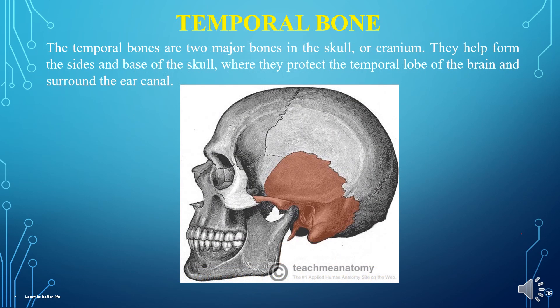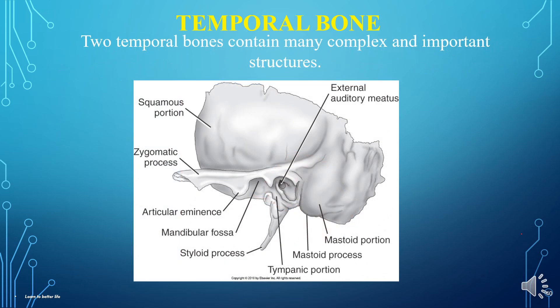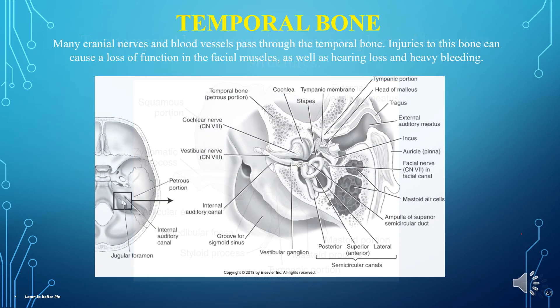The temporal bones are two major bones in the skull. They help form the sides and base of the skull, where they protect the temporal lobe of the brain and surround the ear canal. The other major bones in the skull are the two parietal bones that make up the top of the skull. The two temporal bones contain many complex and important structures — please learn these structures.